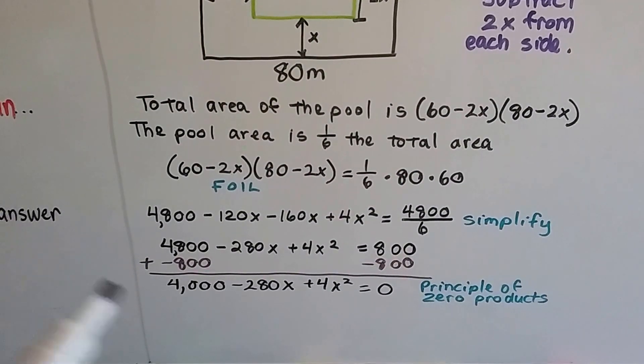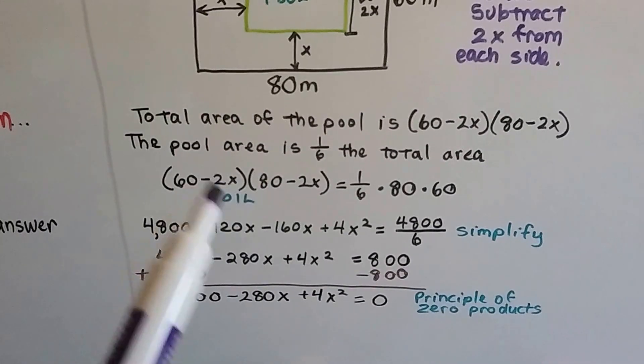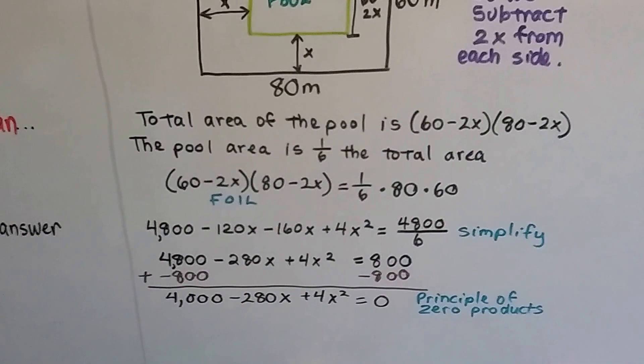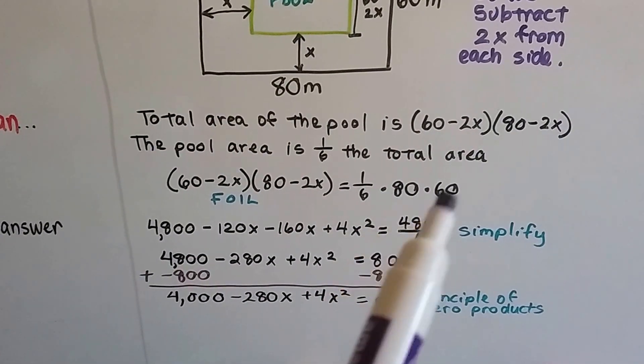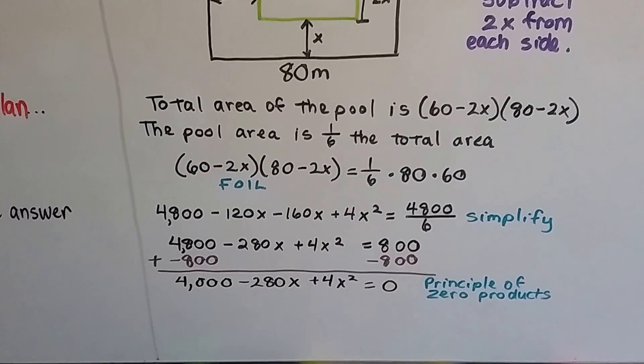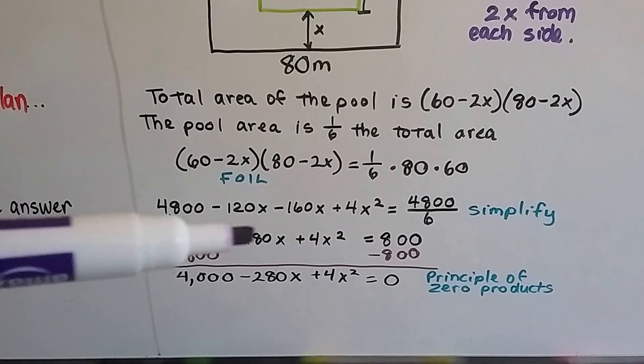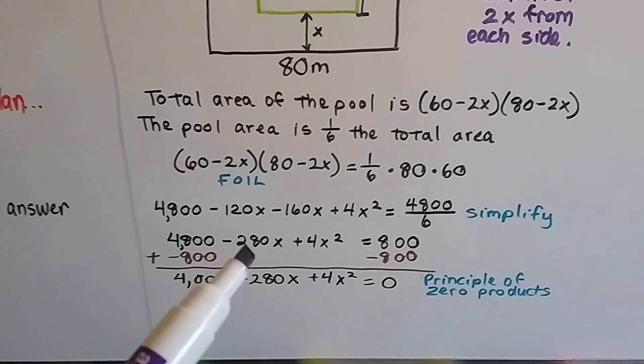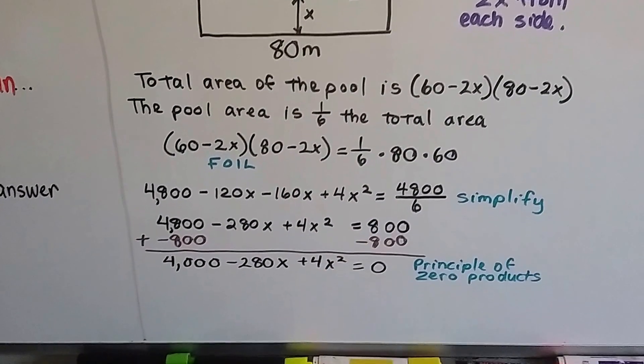We can FOIL this. We get 4800 minus 120x minus 160x plus 4x squared. That's going to equal 4800 divided by 6. When we simplify this, we get 4800 minus 280x plus 4x squared, and that's going to be 800.